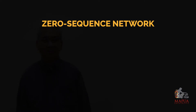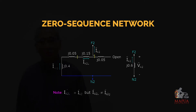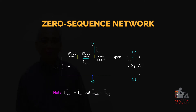For the zero sequence network, we need to consider how the transformer is connected to the system. In this case it is connected in delta while grounded. We then get the Thevenin equivalent of the zero sequence network. Notice that the current flowing through the transmission line I0L is not equal to the current flowing through the faulted point F0, and IA0G is equal to zero since it is hanging.